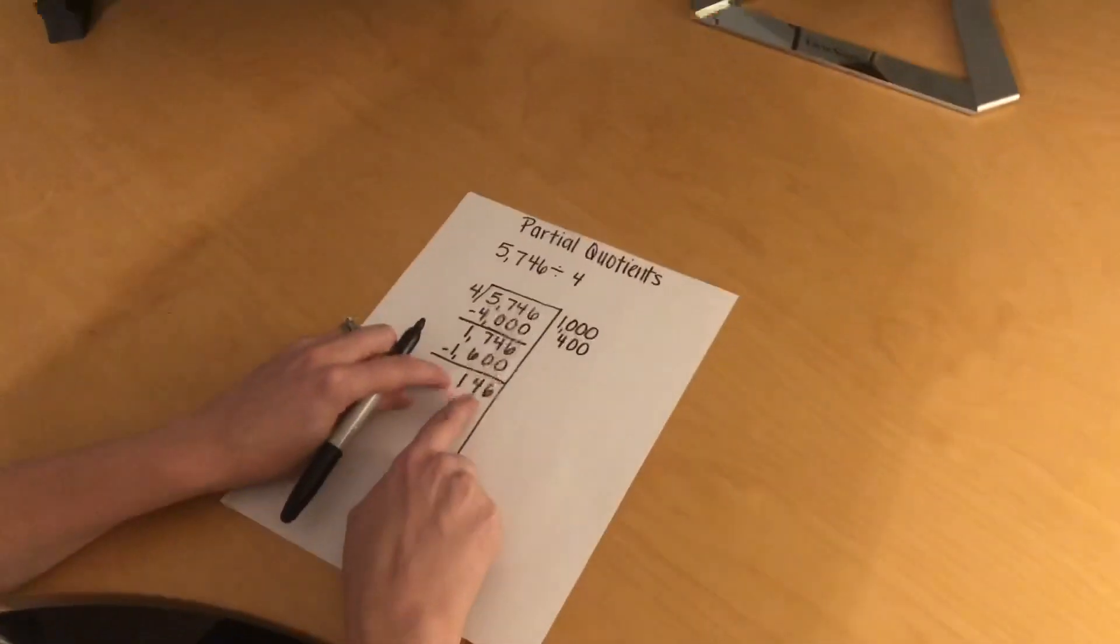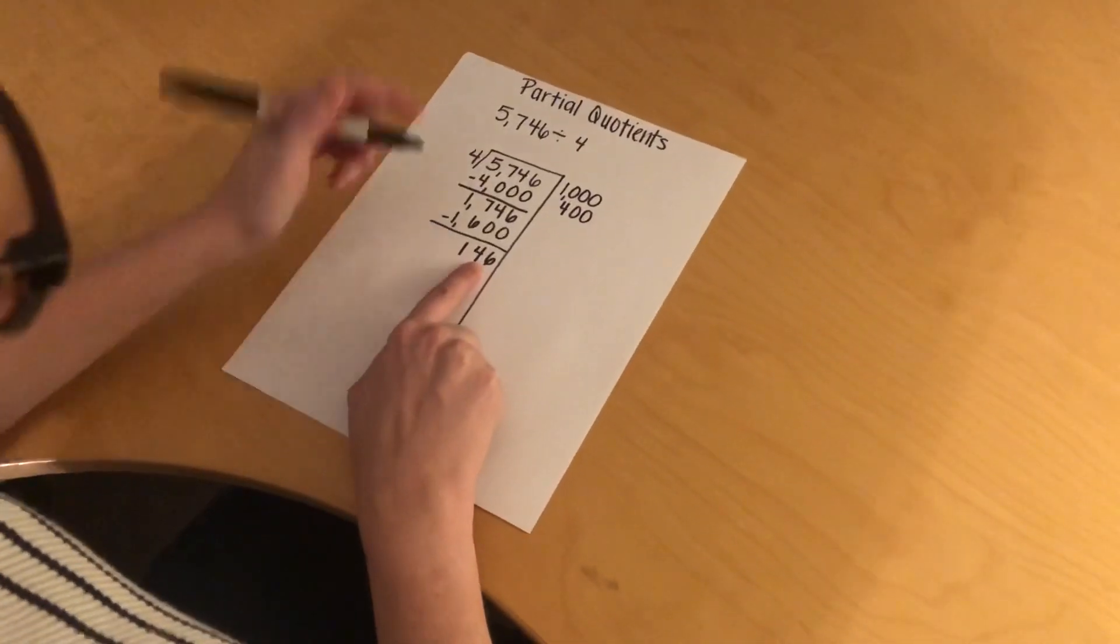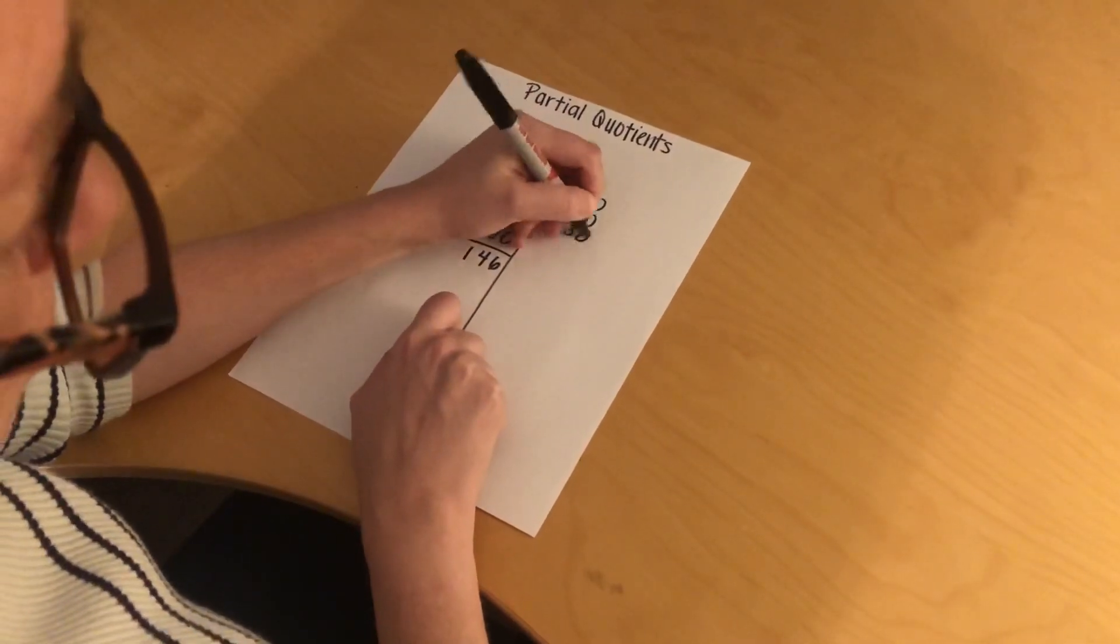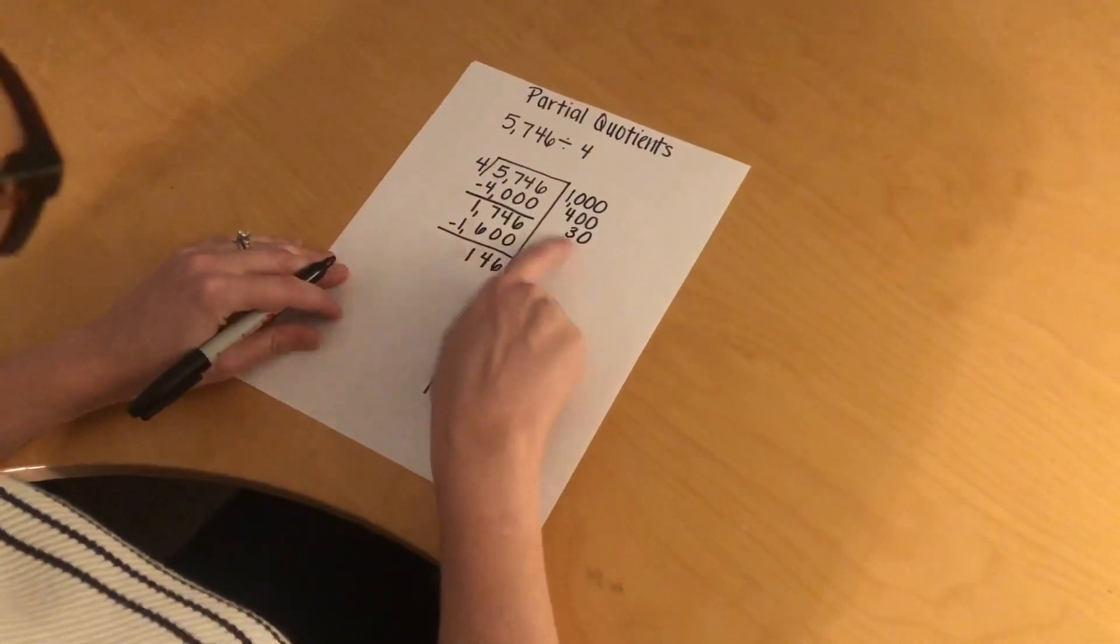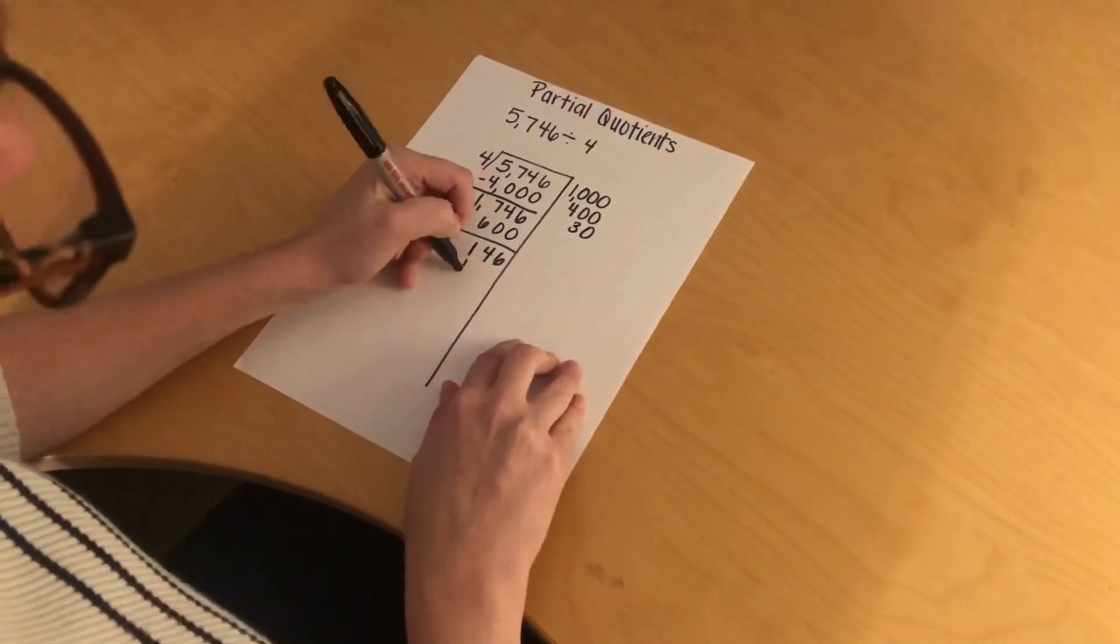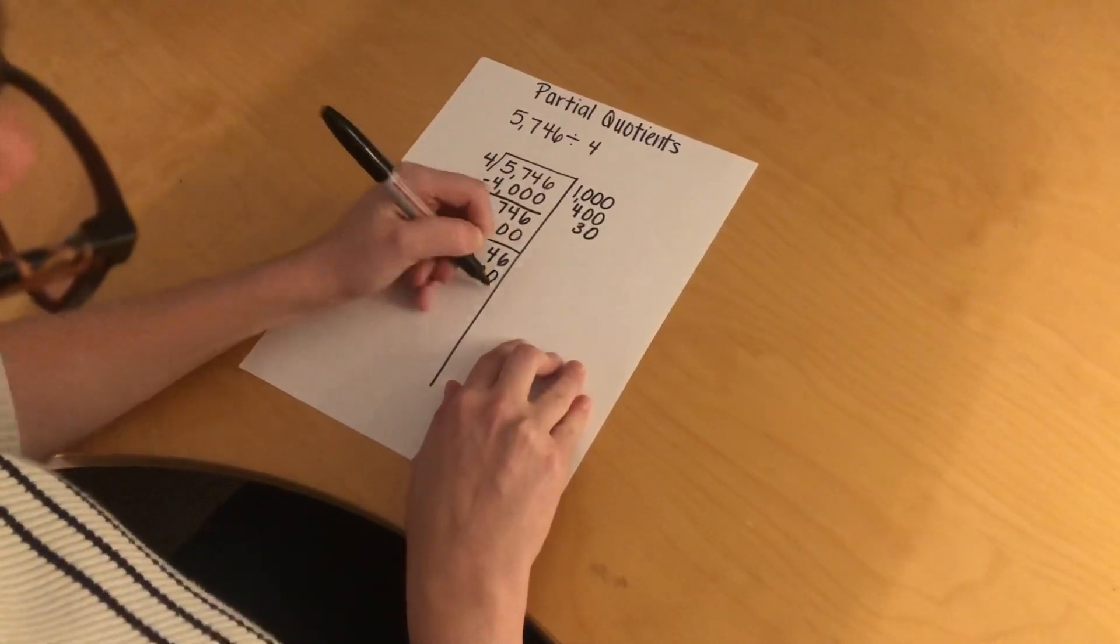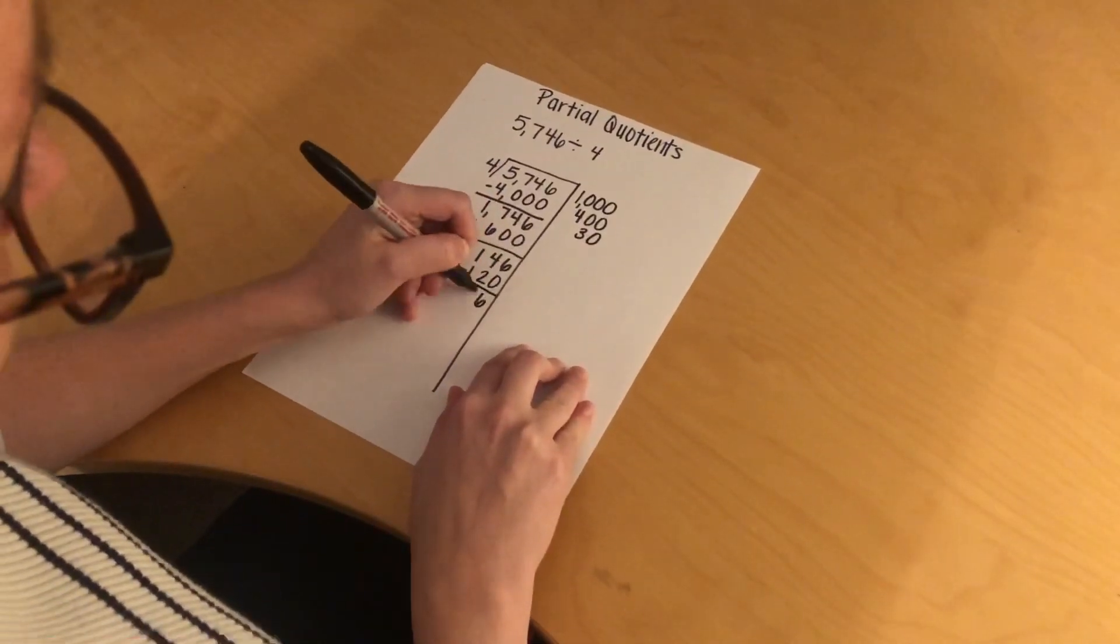There's 1 digit after the 14, so there's going to be 1 zero after my 3, so it's just 30. I multiply 30 times 4, which is 120, I'm going to subtract, I have 26,